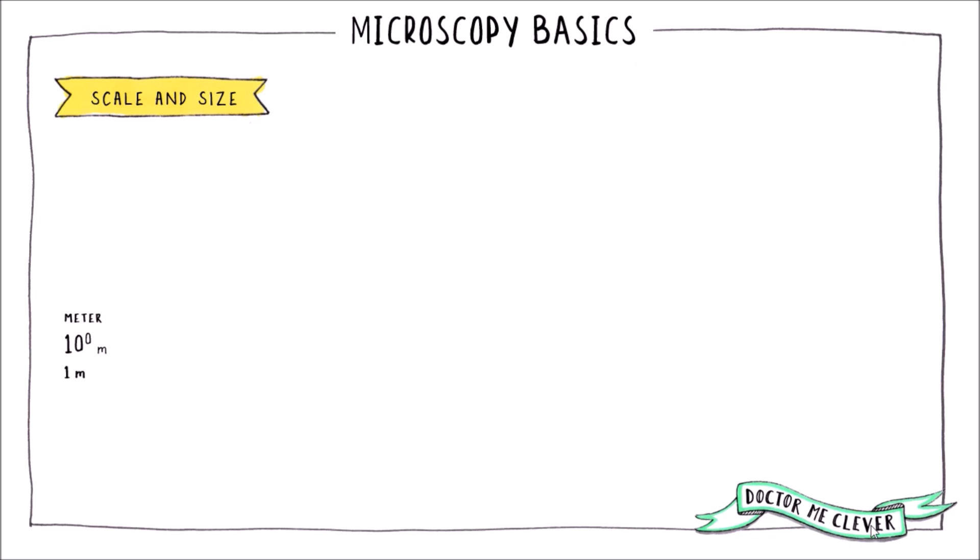Now you need to have an understanding of size and scale when it comes to microscopes, so let's go through some measurements first and then see where the human eye, light and electron microscopes relate to this scale. So we're all familiar with what a metre is and we are all familiar with what a centimetre is which is one hundredth of a metre.